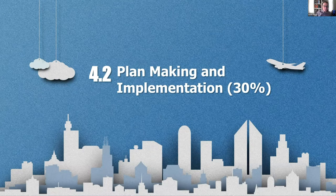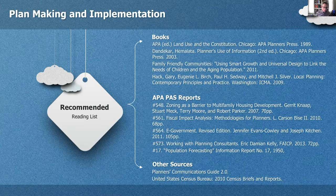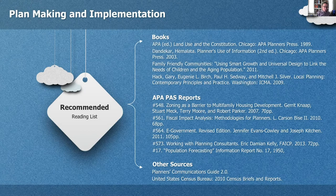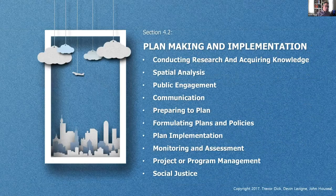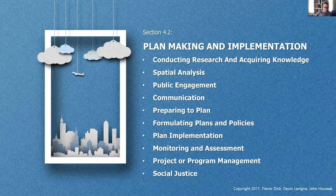Plan-making implementation is 30% of the exam, and the recommended reading list can get pretty deep on this. This part deals with the math or data as it relates to planning. As planners, we gather and collect information in making a plan. Topics include population forecasting, the census, the communications guide, PAS reports. This topic covers how to conduct research, acquiring knowledge, spatial analysis, public engagement, communication, preparing plans, formulating plans and policies, plan implementation, monitoring and assessment, project or program management, and social justice.